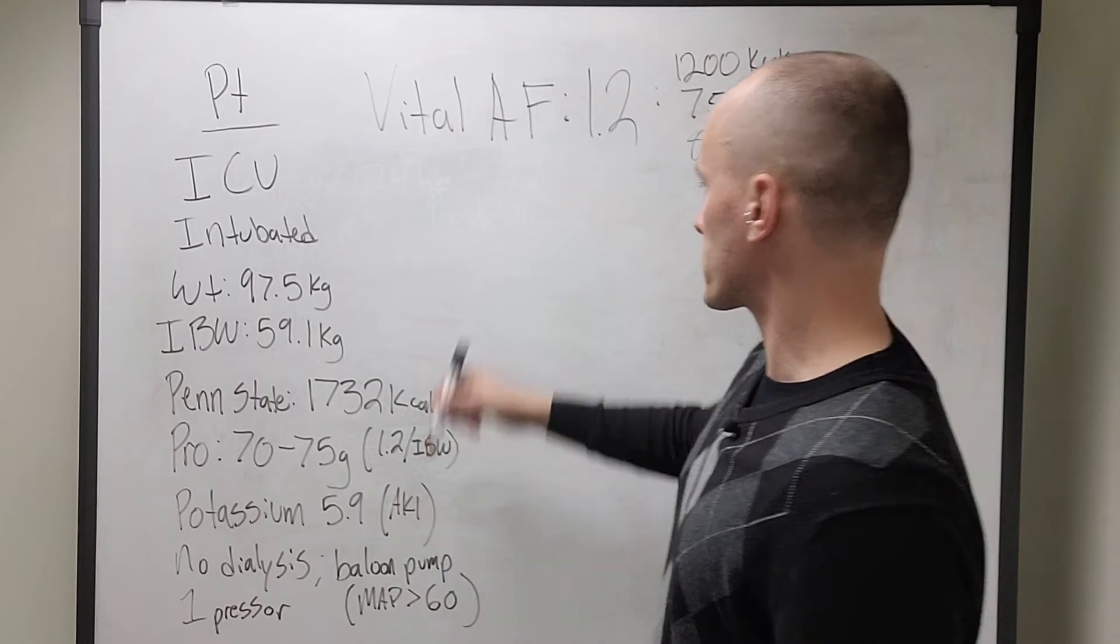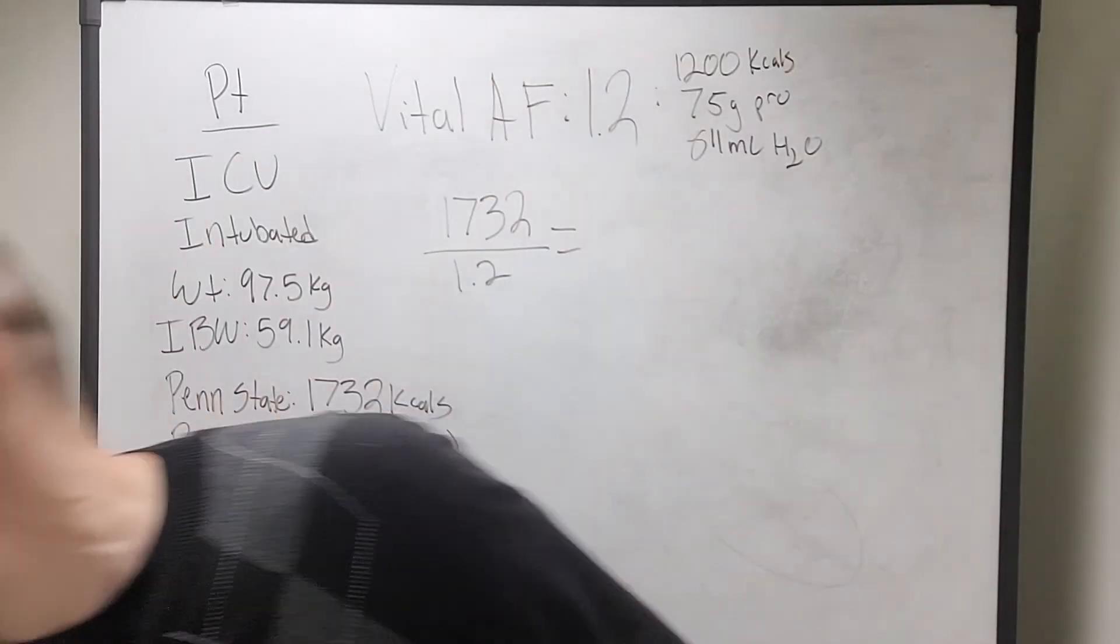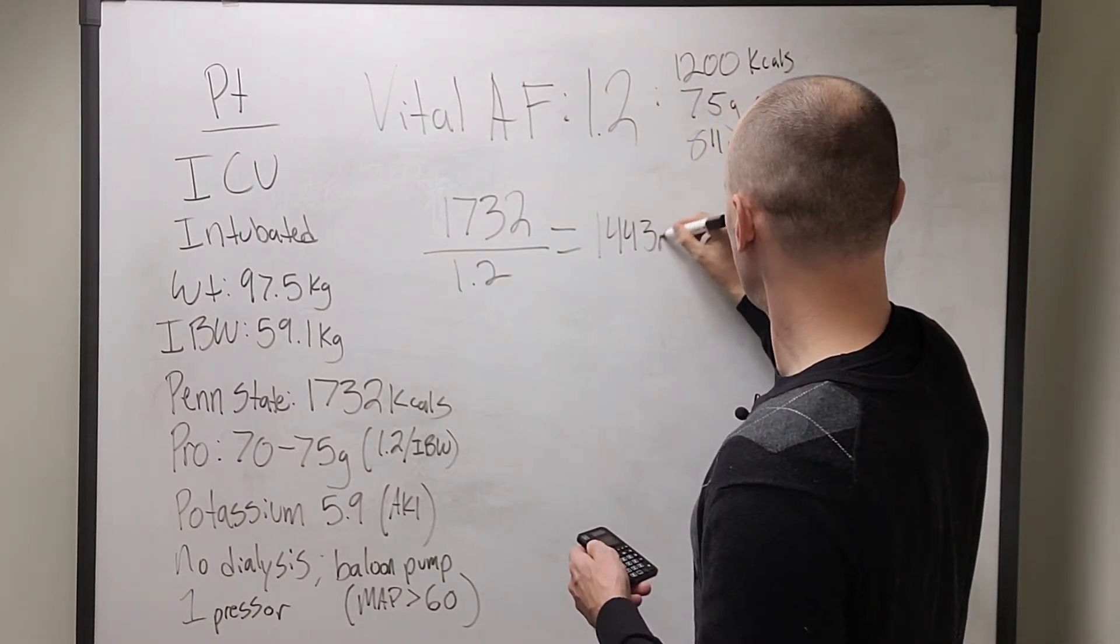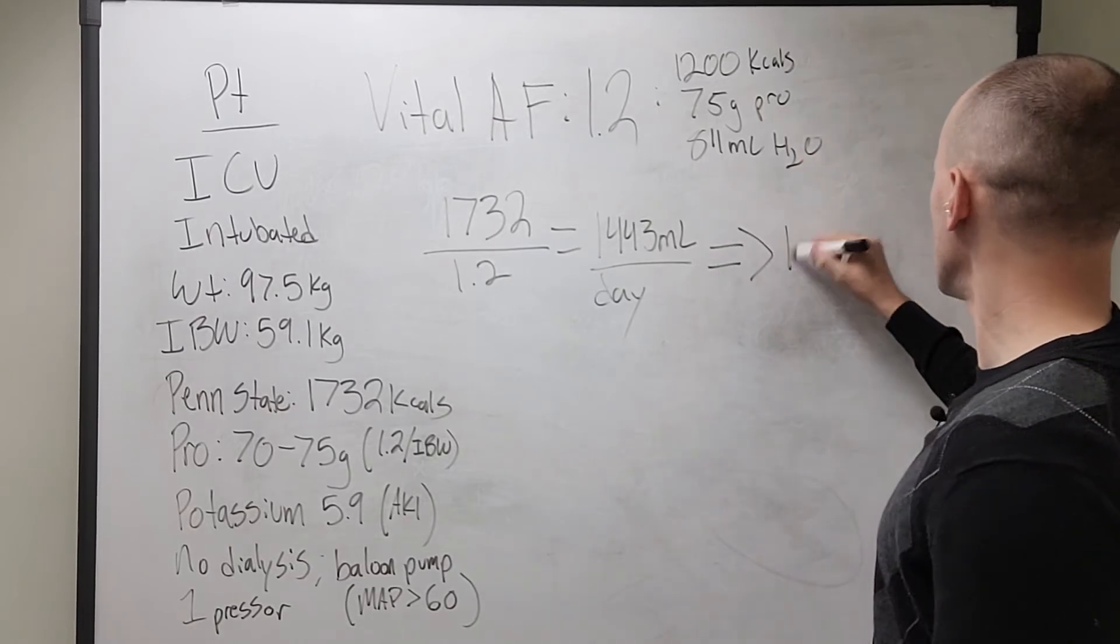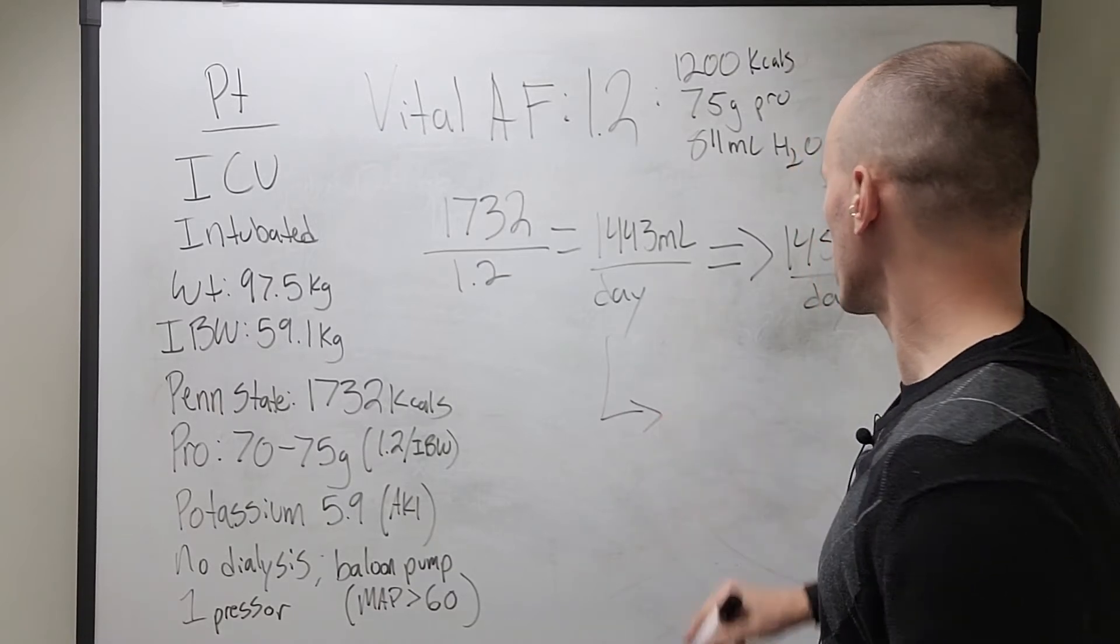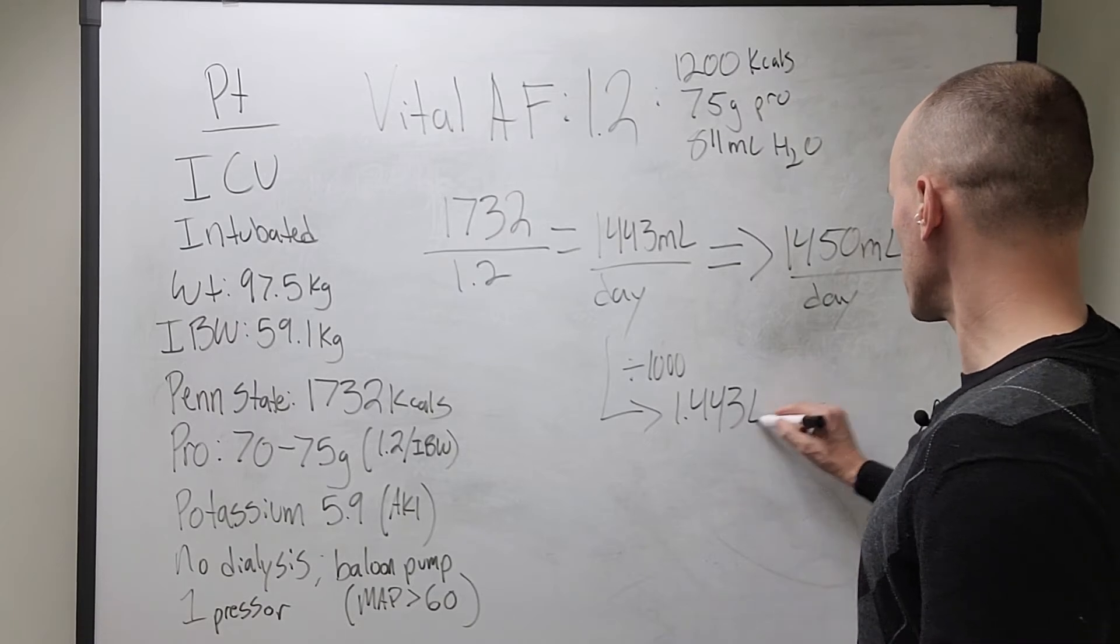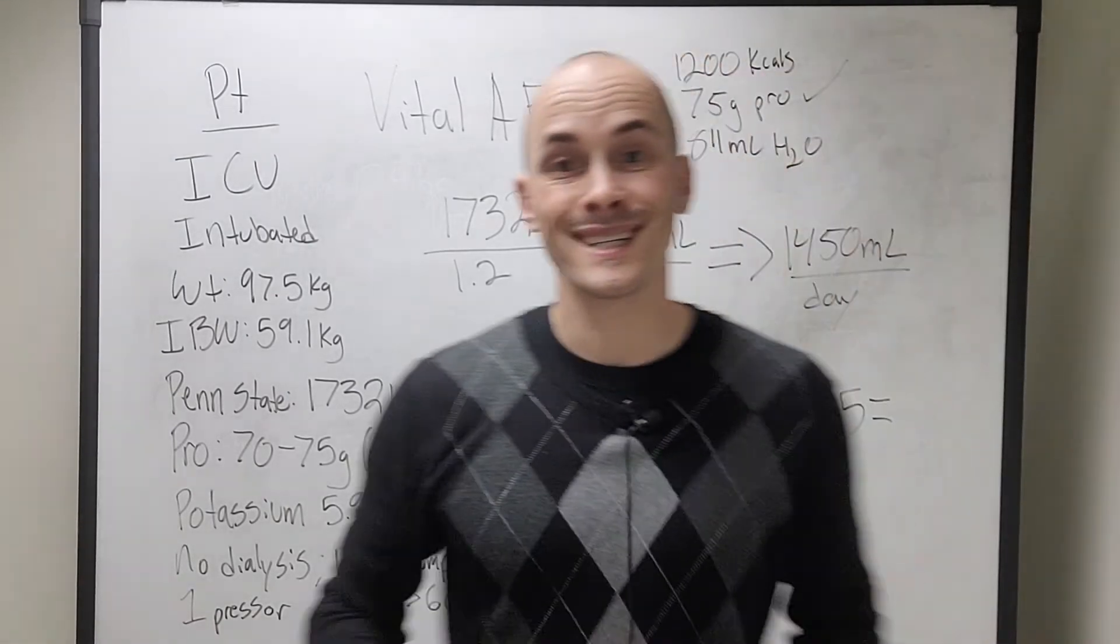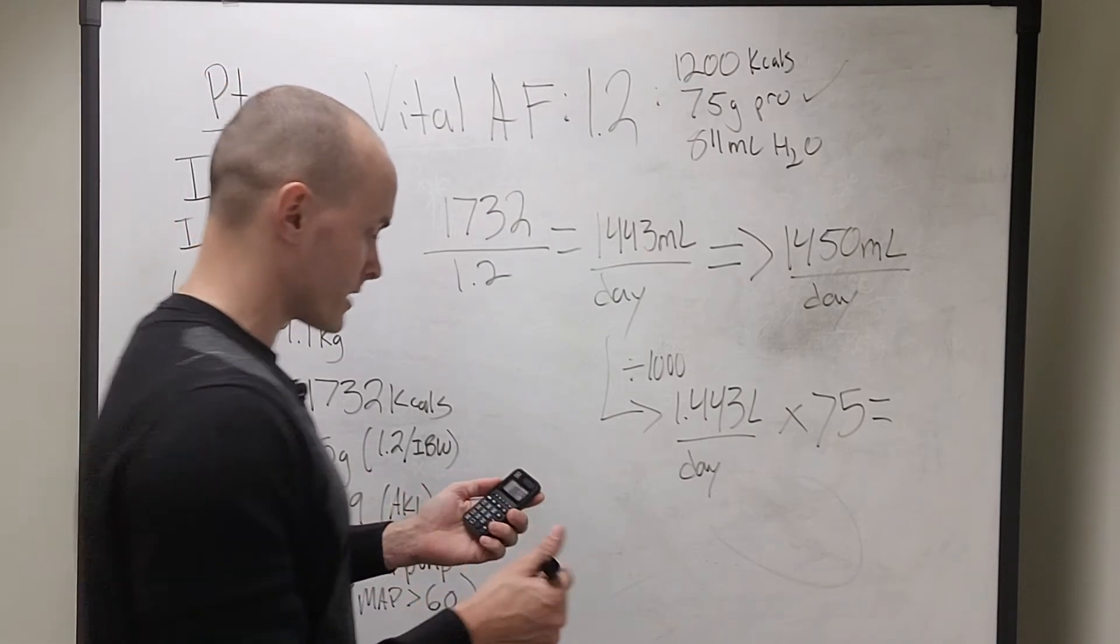What you do is you take their calorie needs, 1732, divide by the concentration, and you'll get 1732 divided by 1.2, you're going to get 1443 mils per day. Now with the volume-based tube feeding, we do that on increments of 50 mils. So we're going to round up to 1450 mils per day. Now what you could do is you can take this number here, you can divide by a thousand to get your multiplier. So it'll be 1.443 liters per day. And then you can multiply this by the protein here to figure out if this formula meets their protein needs. 1.443 times 75 gives us a protein of 108.